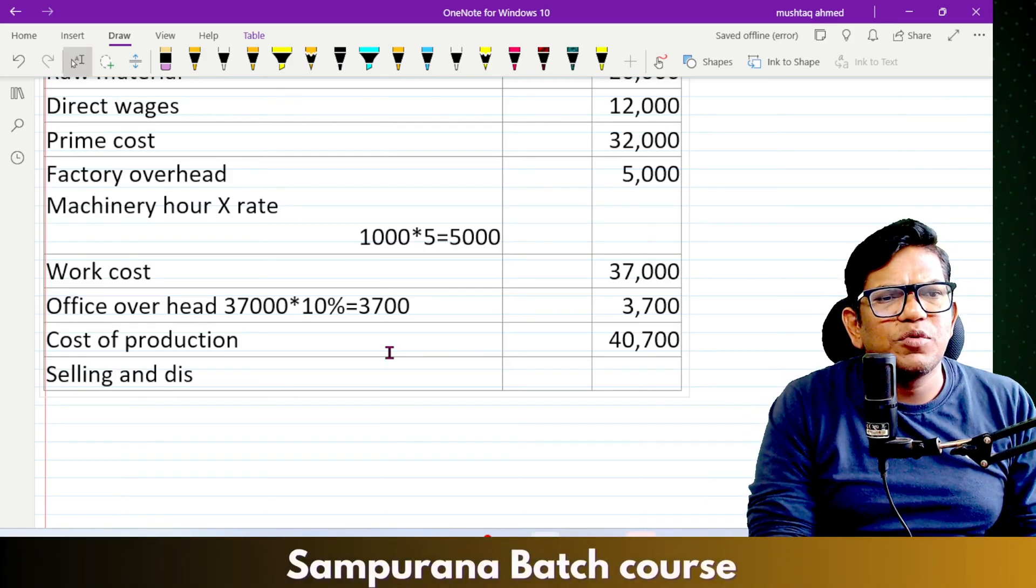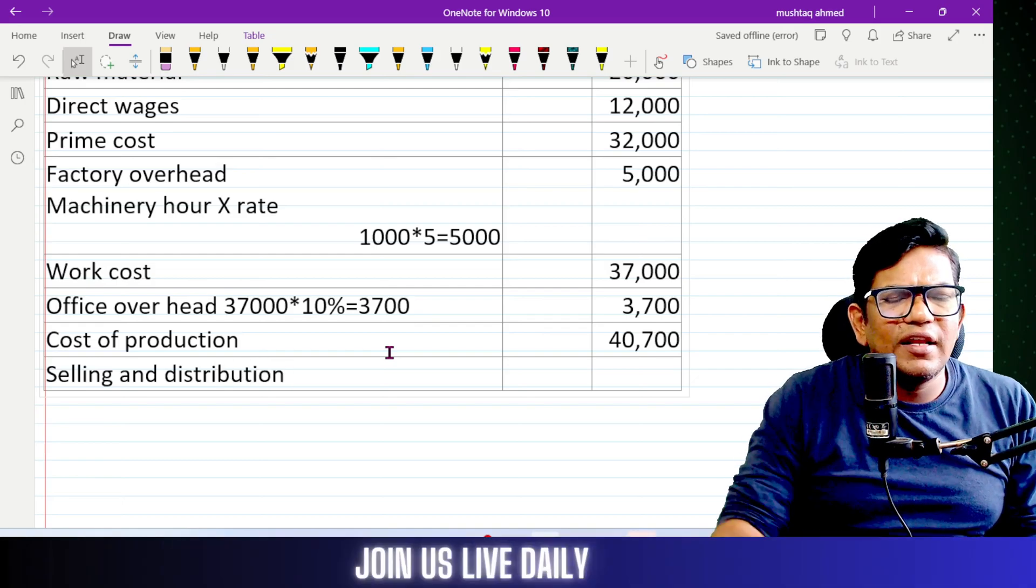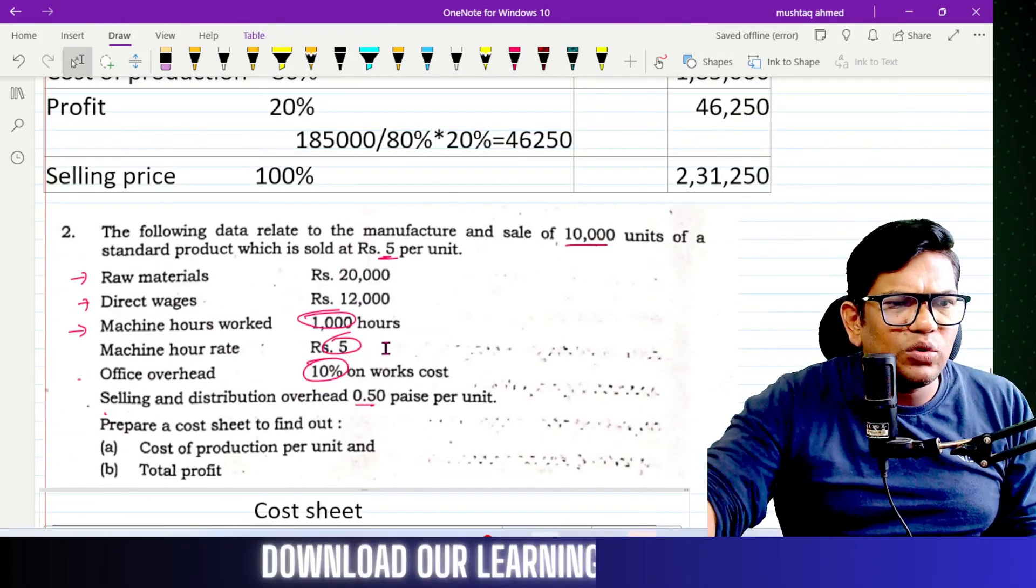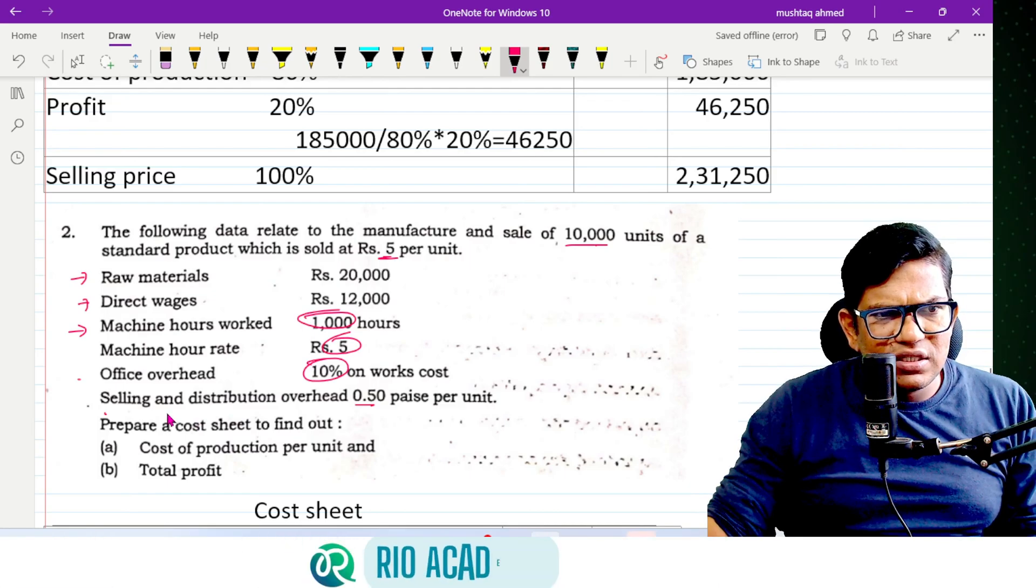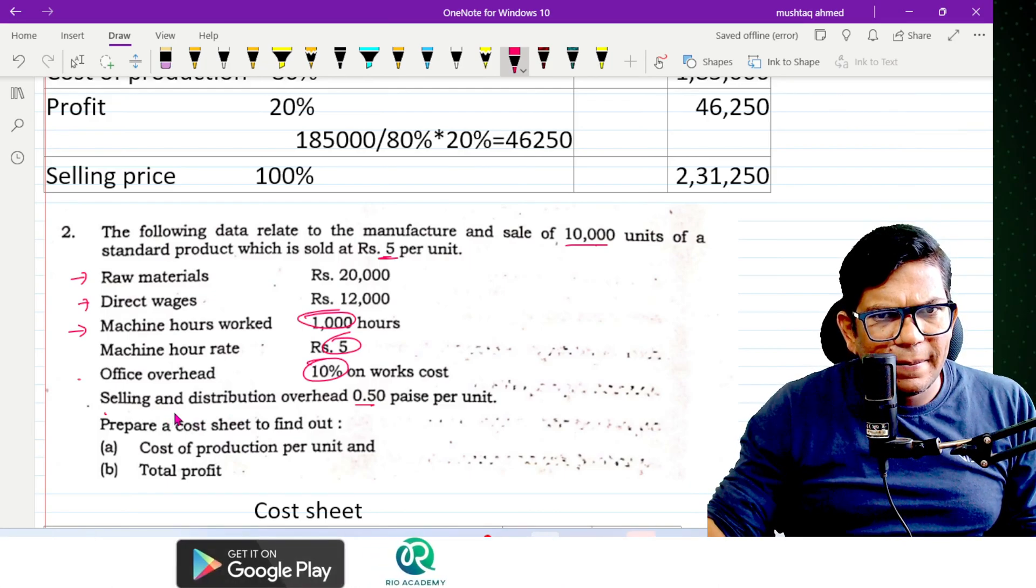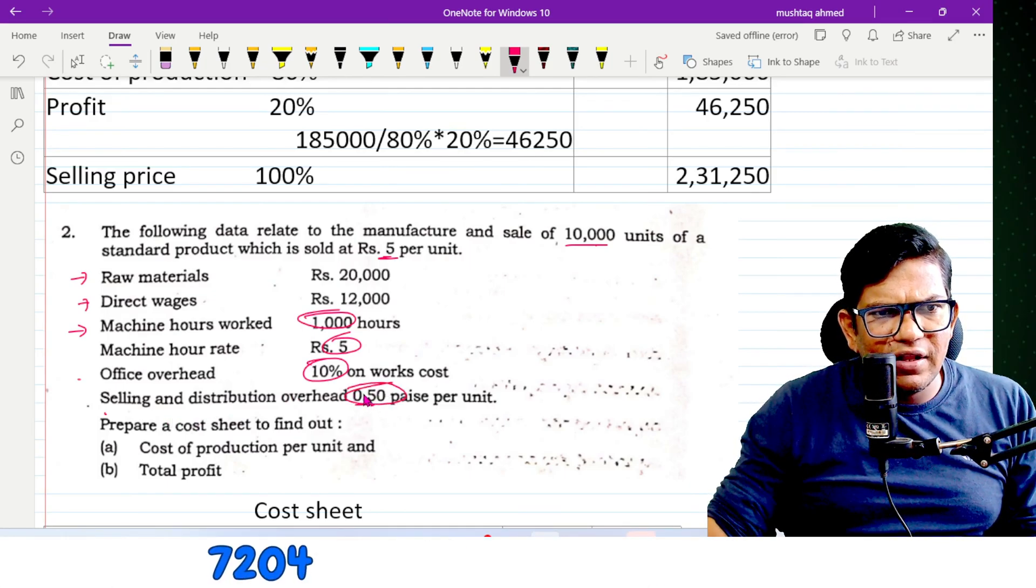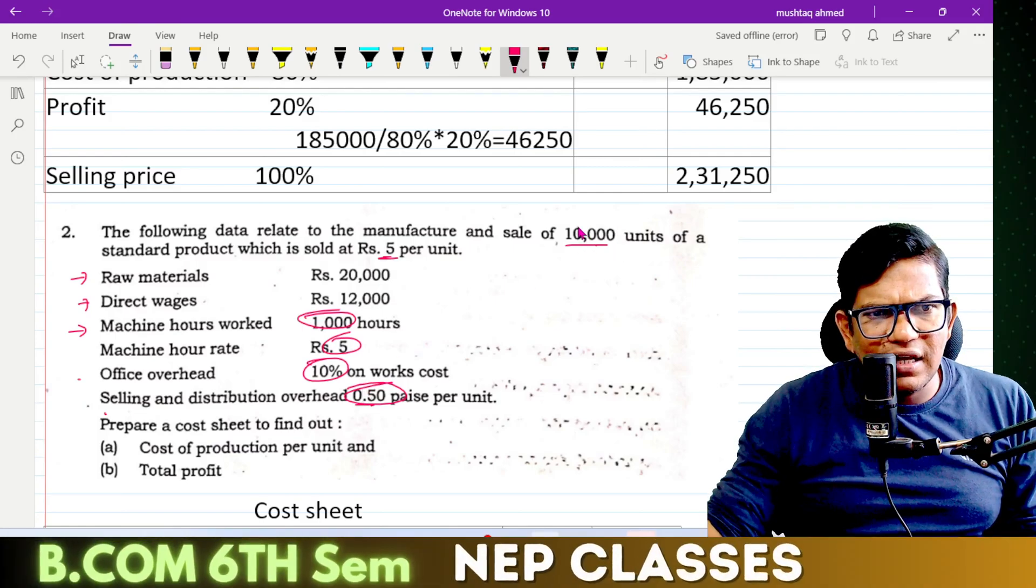Selling and distribution: 50 paise per unit for 10,000 units.